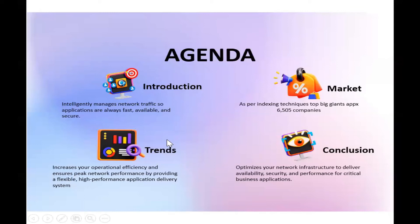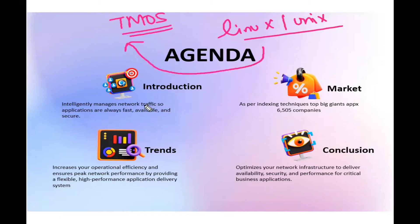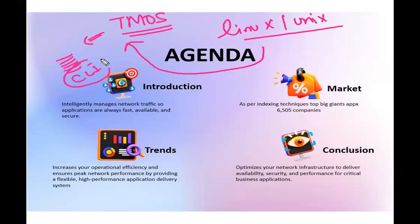Let me talk about TMOS. Every device — routers, firewalls, anything — is built upon Linux or Unix. Similarly, F5's base OS is also Linux/Unix. On top of that they built their operating system called TMOS: Traffic Management Operating System. When you work with TMOS, it feels similar to Cisco, Juniper, or other operating systems. We can configure through the CLI, though I can't give you full CLI detail in the very first class.